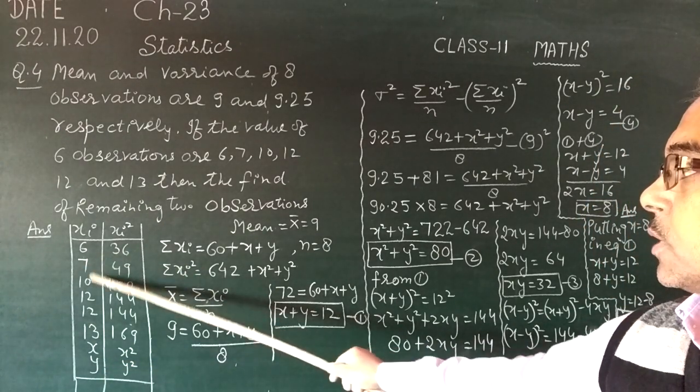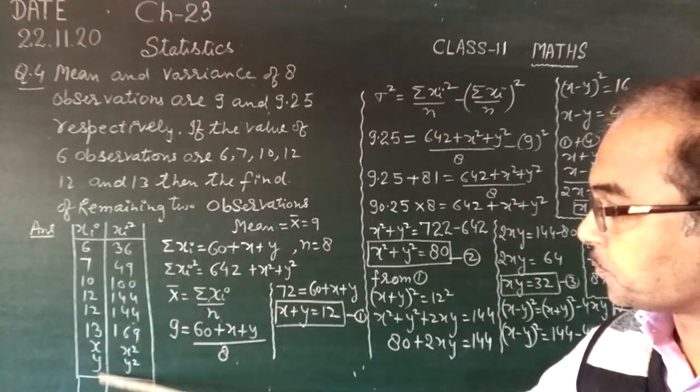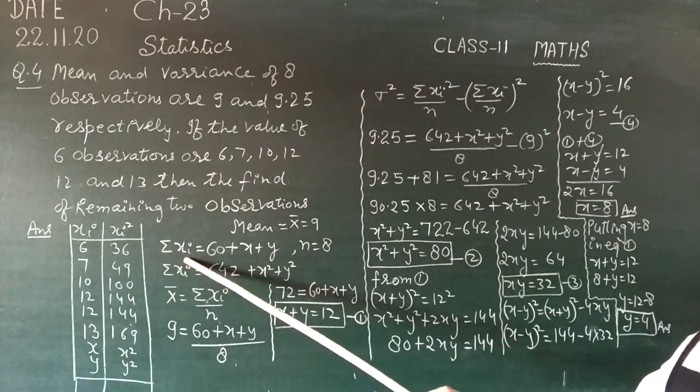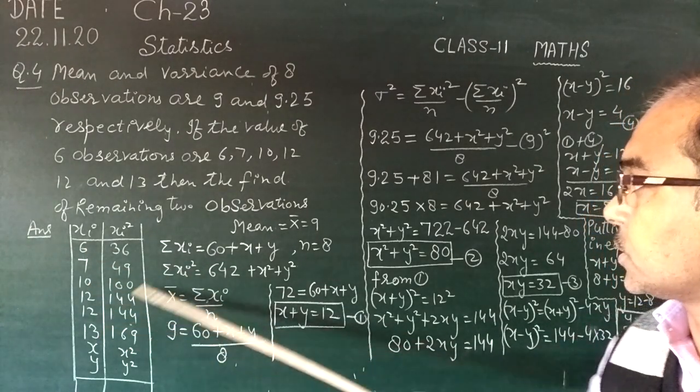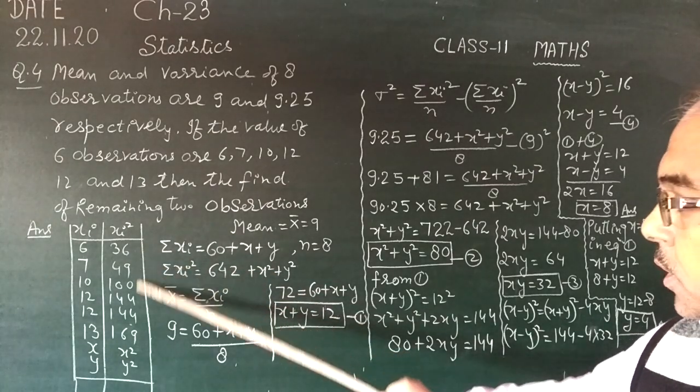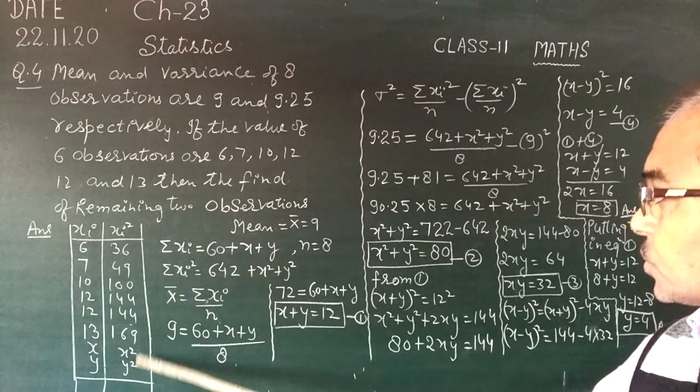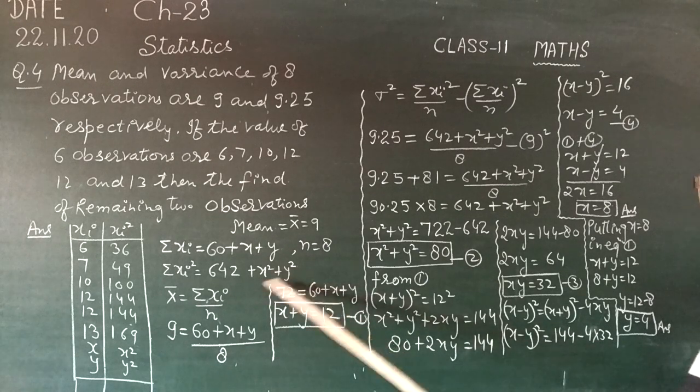The total is 6, 7, 10, 12, 13, x, y. The total number is plus x square plus y square.